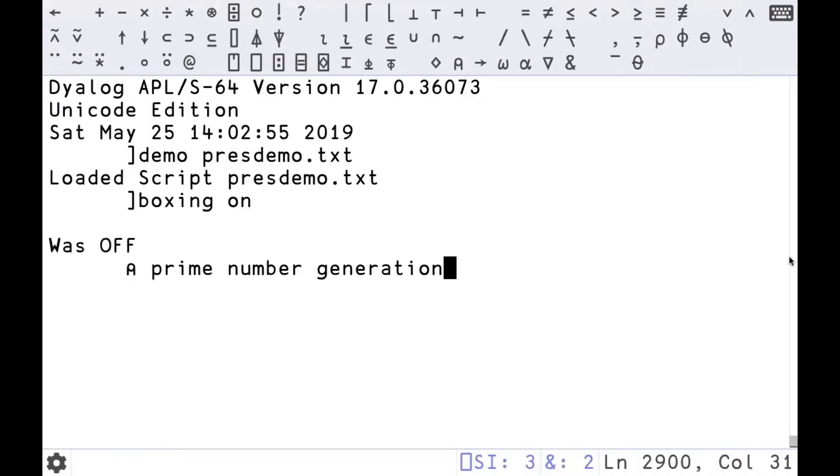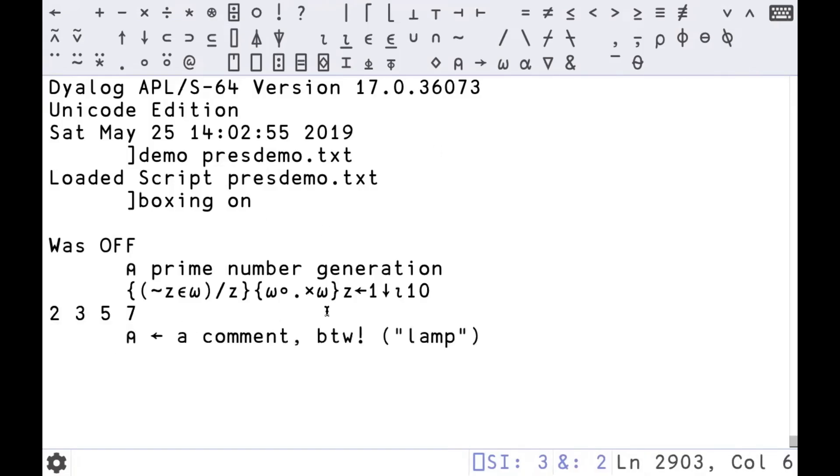This is Dyalog at the top. Those are all of the symbols in APL, so there's not so many of them, easy to memorize. This is the algorithm I just showed you, except for the first 10 numbers. Here's the first symbol I'm going to teach you: that's lamp. It denotes that the rest of the line is a comment because it illuminates code. It's a lamp.